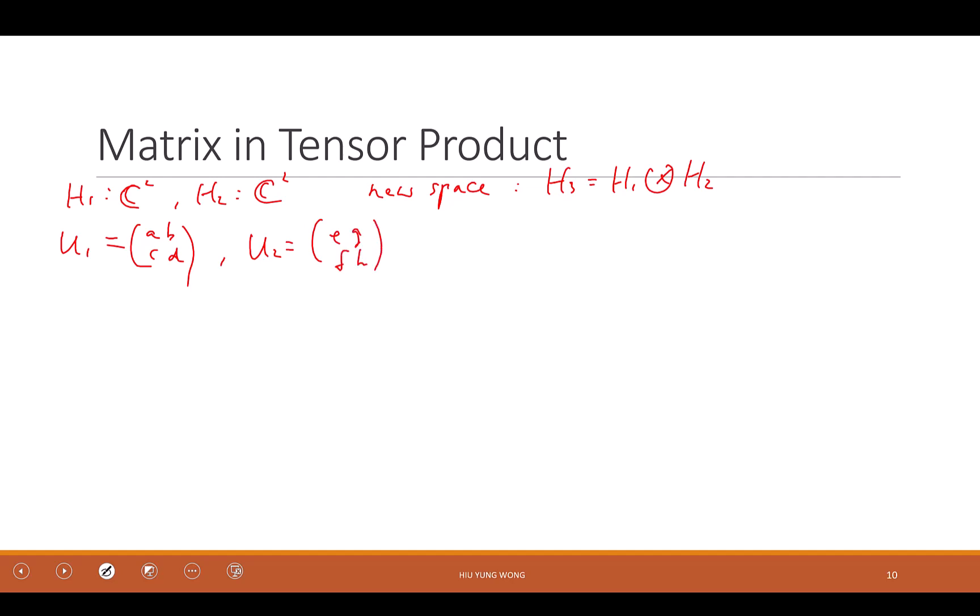So how do you find the tensor product of this two matrix? Again, just like what you did for the vector. U3 equals to U1, tensor product U2 equals to, just write it down, A, B, C, D, tensor product. Now here you need to write tensor product. If you skip tensor product, I don't know if you're doing matrix multiplication or not, right? Now they are different, right? So you need to be careful. E, G, F, H. How do you do it? As I said, just like what you did for the column vector.